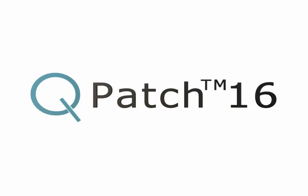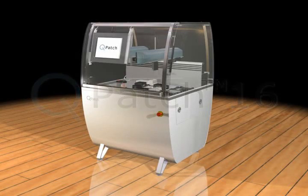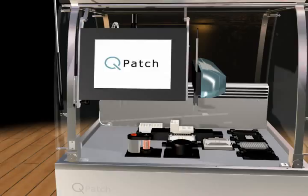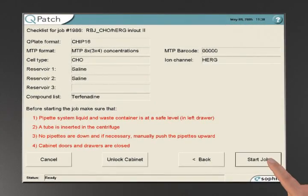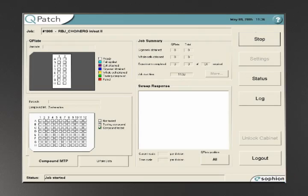The Q-Patch is a 16-channel automated patch clamp system for ion channel screening. Following Q-Patch setup, a simple click on the touchscreen starts the experiment.